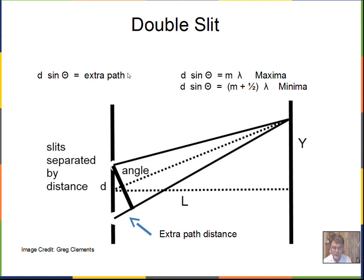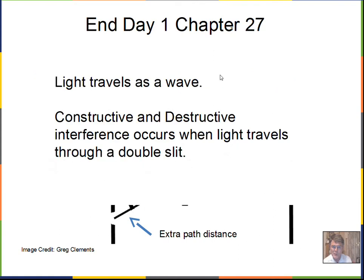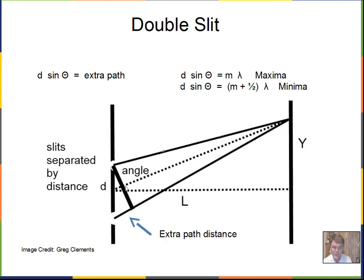So there's an equation. D sine theta equals m lambda is a maxima. M is an integer. Either zero or one or two or three. But this can be used to calculate the angle at which we get this bright spot on the screen. The maximum. We can also have minima. When m is a zero, then we'd have half wavelength of extra path. Remember, the D sine theta is the extra path distance. D is here. Theta is here. D sine theta is the calculation that gives us the length of this short side of the right triangle. So D sine theta is m lambda. That locates the maxima. M is zero, one, two, three, et cetera.